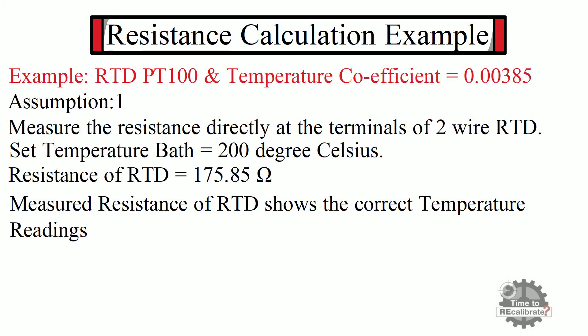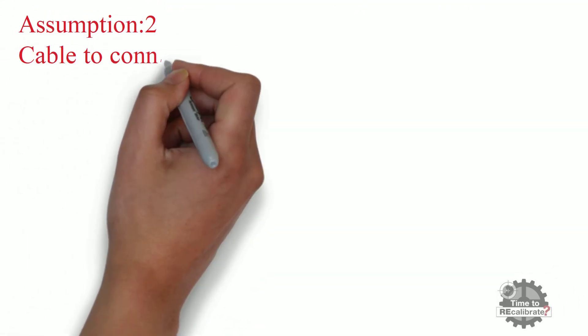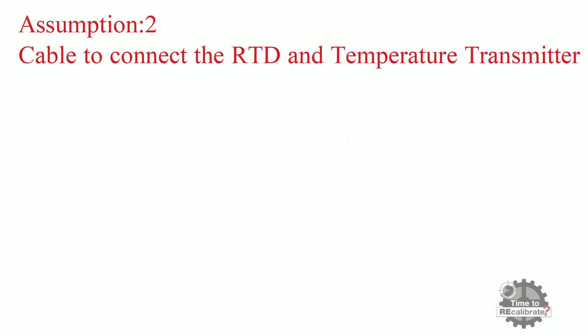Let's take one more example to understand lead wire resistance in detail. In industry applications, we use a cable to connect the RTD to the temperature transmitter. This cable resistance is known as lead wire resistance, and it will add to the total resistance.